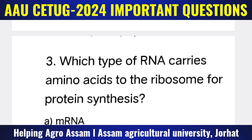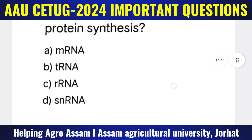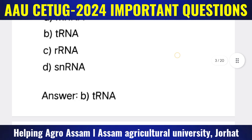Question 3: Which type of RNA carries amino acids to the ribosome for protein synthesis? Options: (A) mRNA, (B) tRNA, (C) rRNA, (D) sRNA. The correct answer is option B — tRNA.